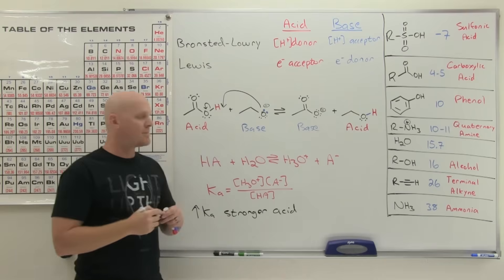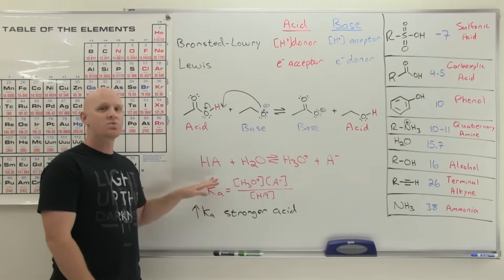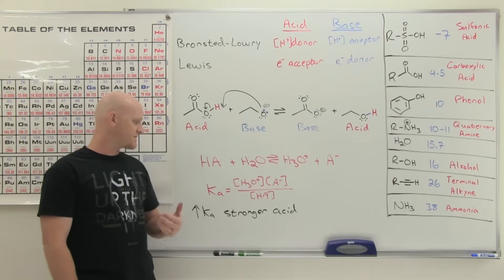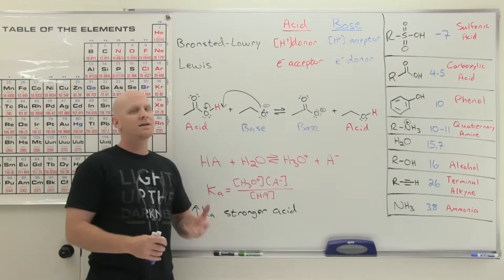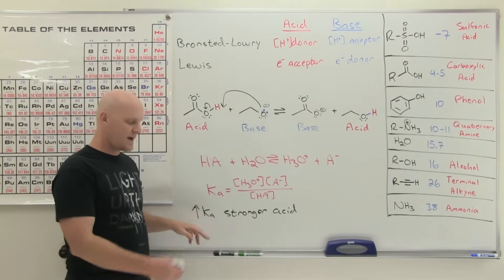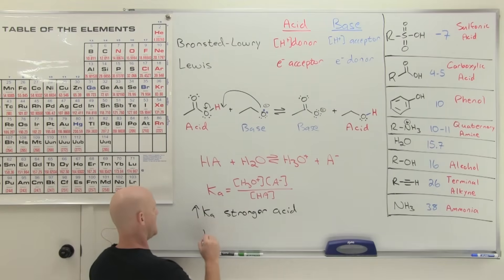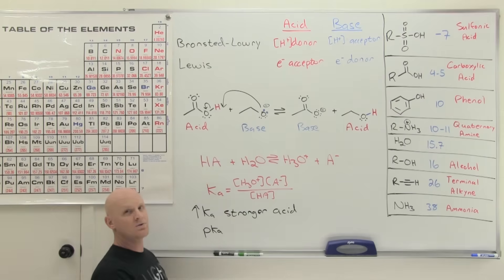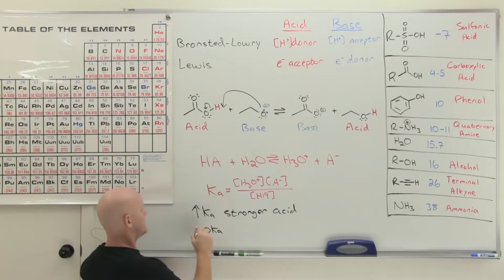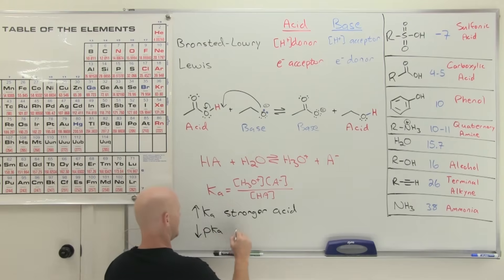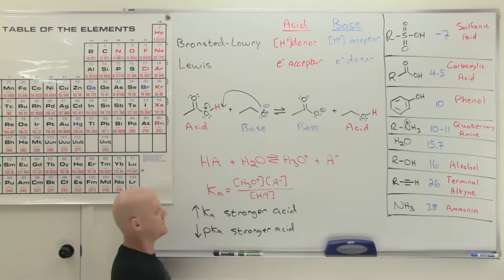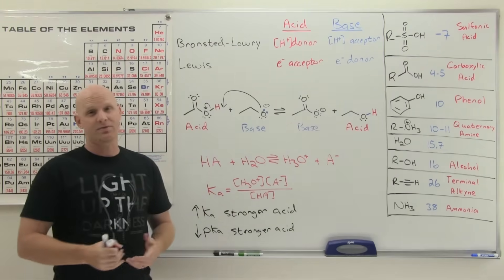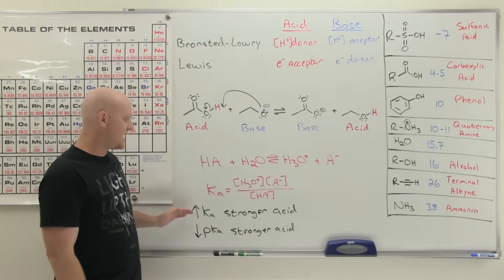Ka was the most common numerical value used in general chemistry to rank relative acidities — higher Ka means stronger acid. But in organic chemistry, much more commonly, we use the negative log of Ka: the pKa. Because it's the negative log, as Ka goes up, pKa goes down — just like pH goes down as H-plus concentration goes up. So a stronger acid means a lower pKa, and we'll compare pKa's rather than Ka's.